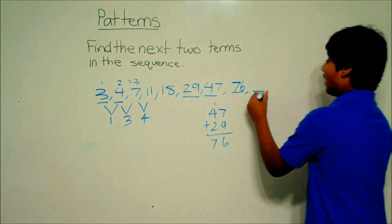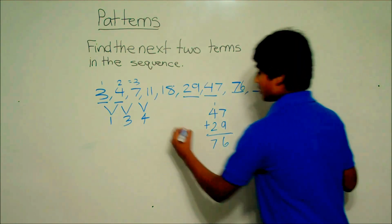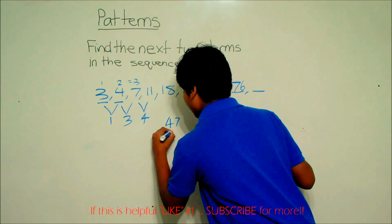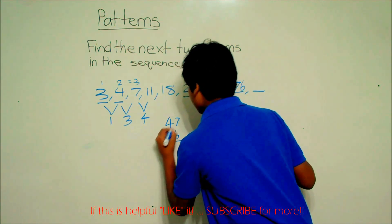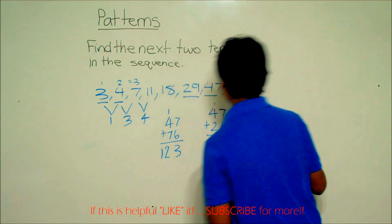Now for our last term, we have to add 47 and 76. So, 47 plus 76. 7 plus 6 is 13, carry the 1, and that is 123.